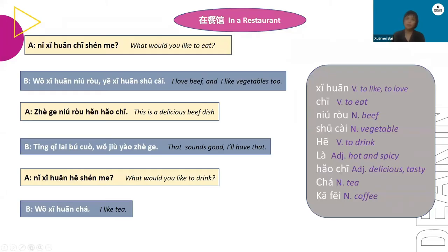What would you like to eat? 你喜欢吃什么? I love beef, and I also love vegetables. 我喜欢牛肉，也喜欢蔬菜。 This is a delicious beef dish. 这个牛肉很好吃。 That sounds good. I will have that. 听起来不错，我就要这个。 What would you like to drink? 你喜欢喝什么? I like tea. 我喜欢茶。 It's a very simple conversation.